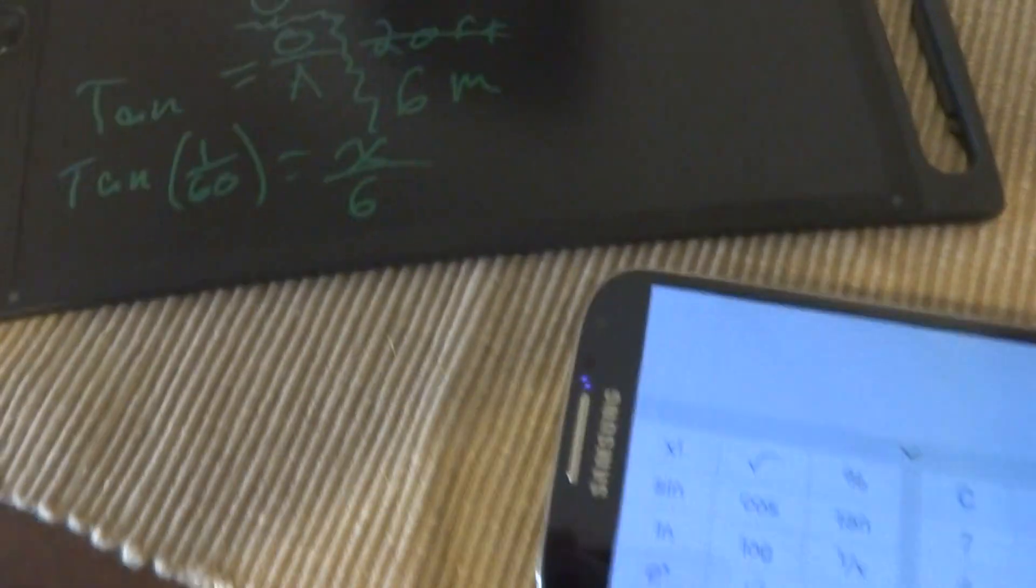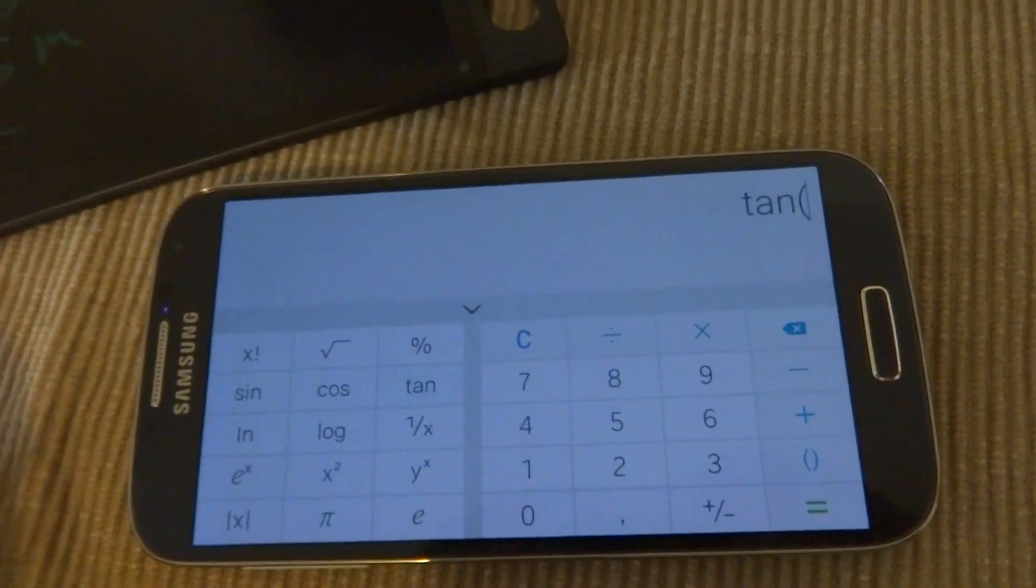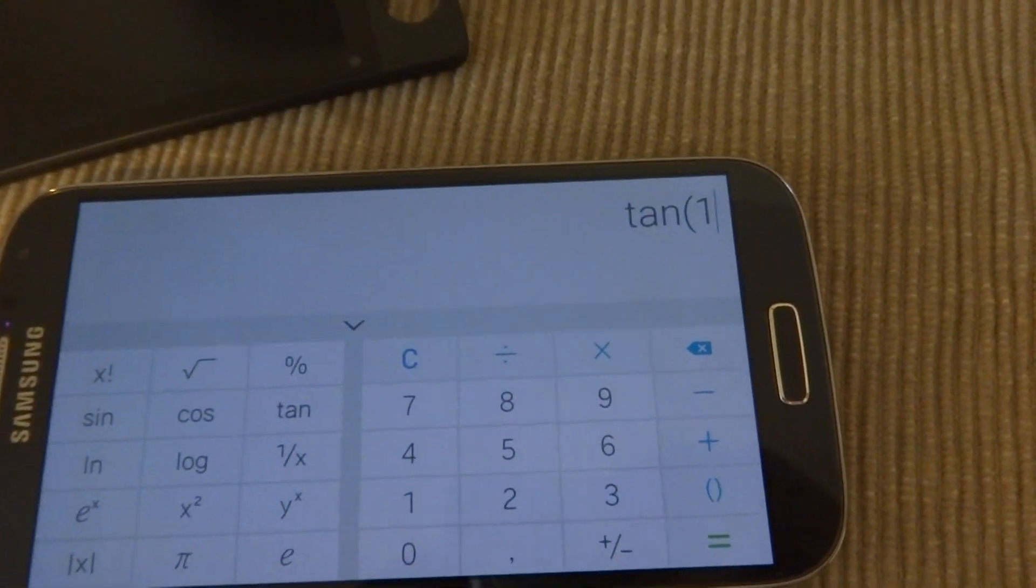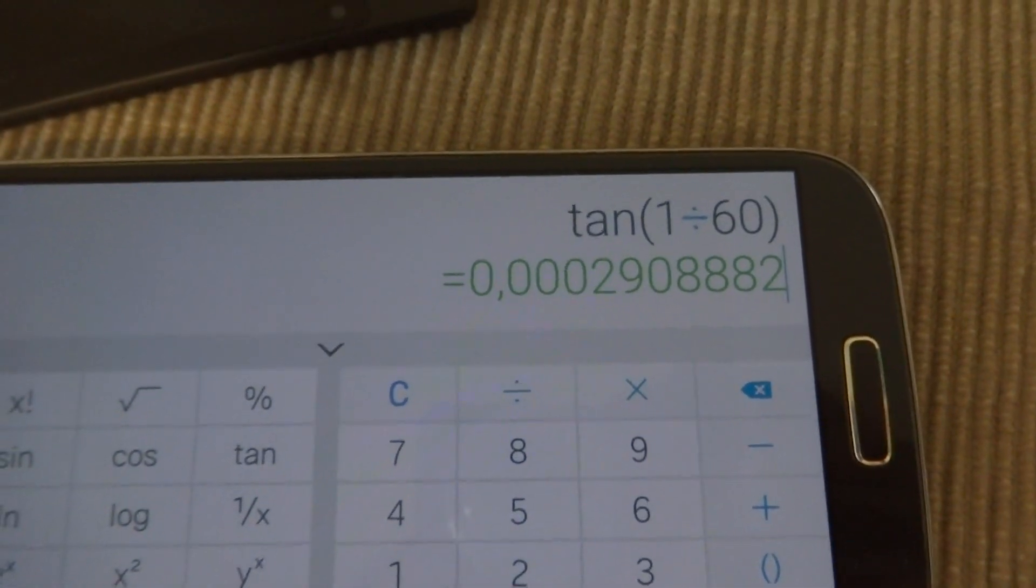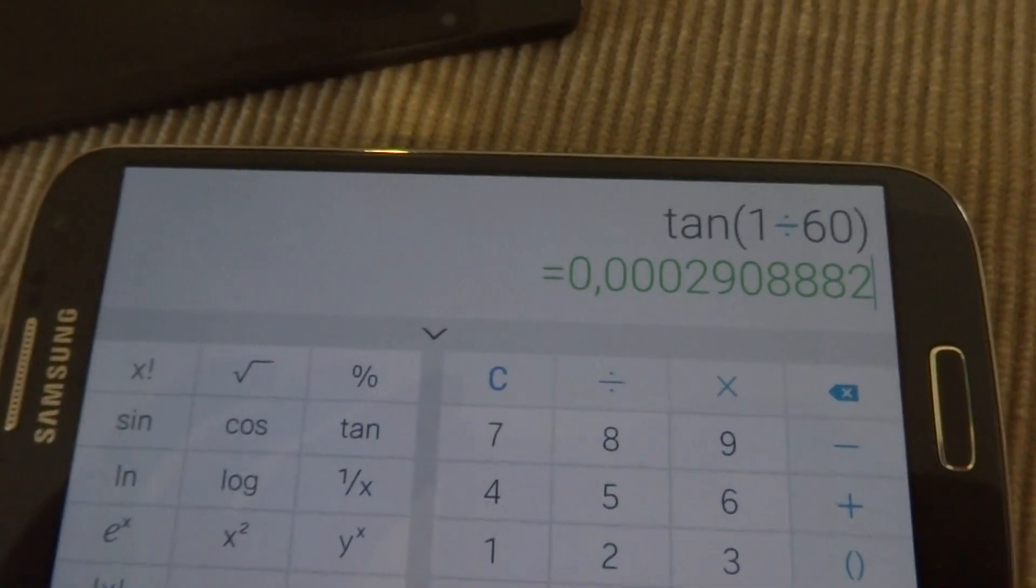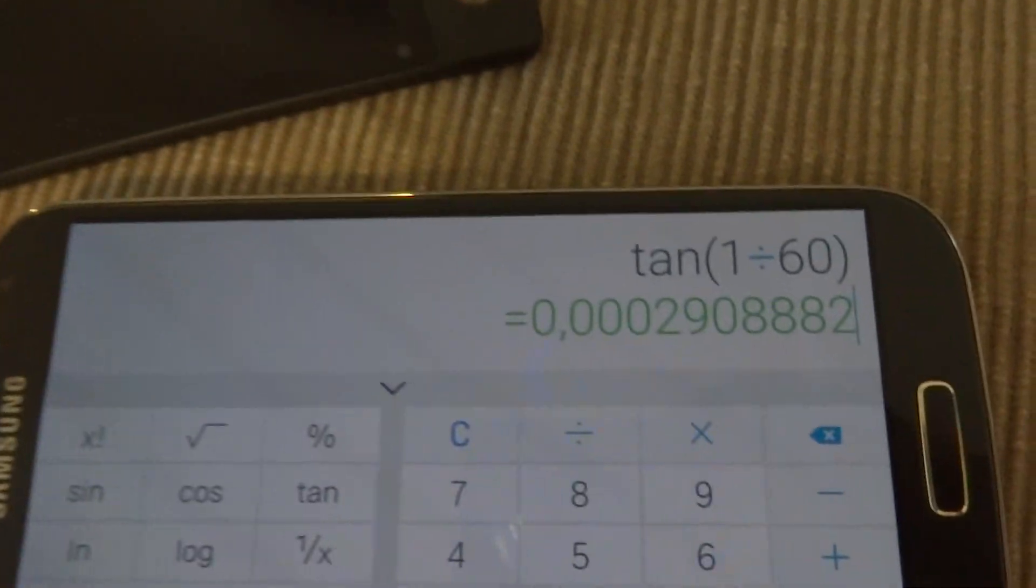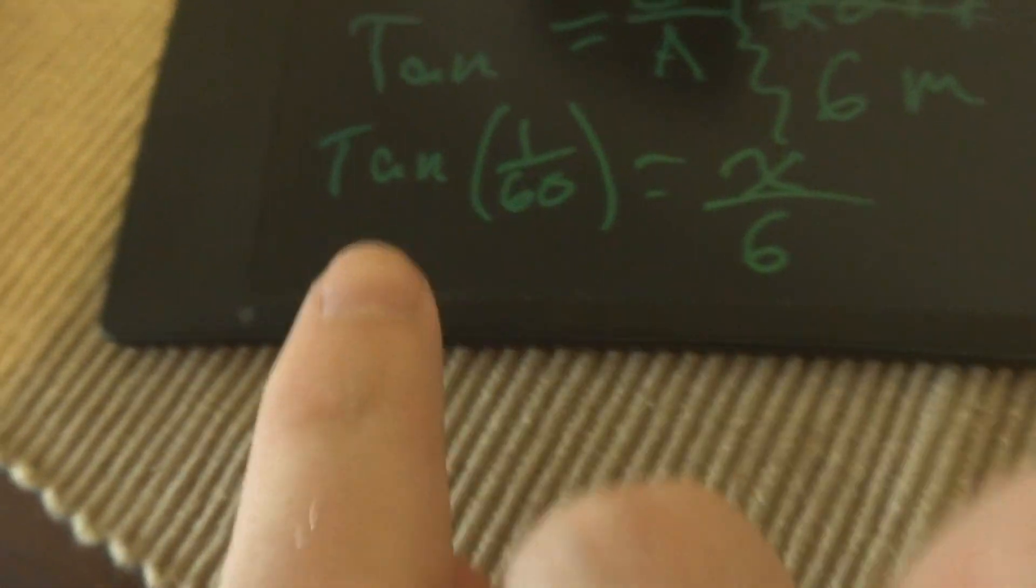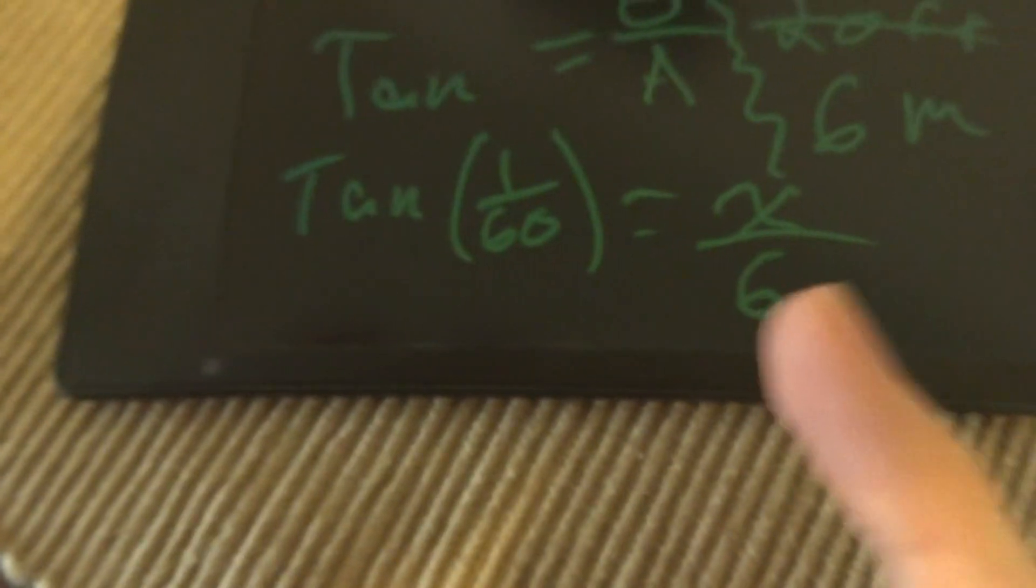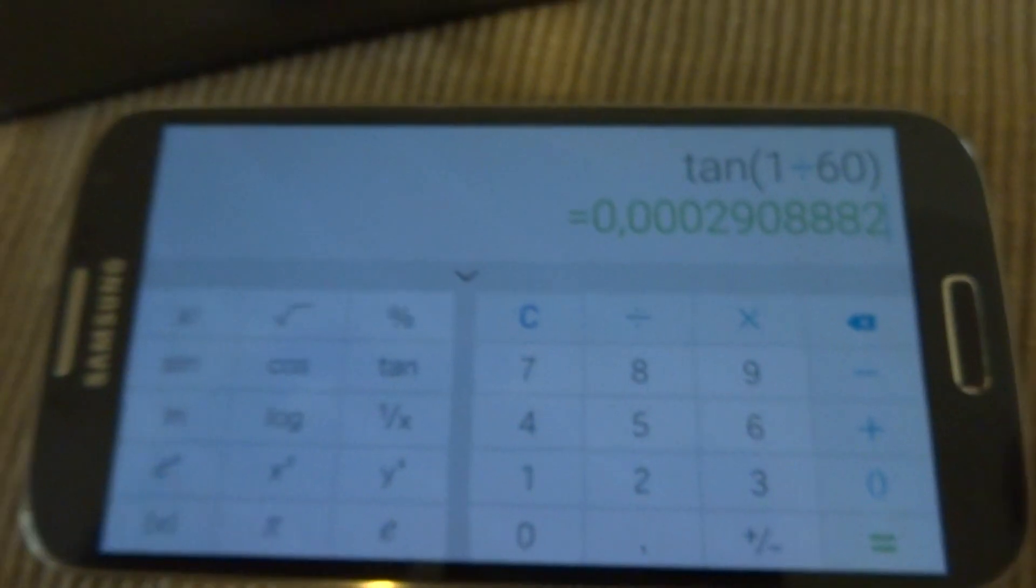So to come over here to the calculator and we do tangent, 1 divided by 60, equals that big long decimal. And my phone is in French right now so it has a comma, but that's actually a decimal place to most people. So then we know what's in here, so if we cross multiply, that would be this number over one is equal to x over six. So we just have to multiply this by six meters.